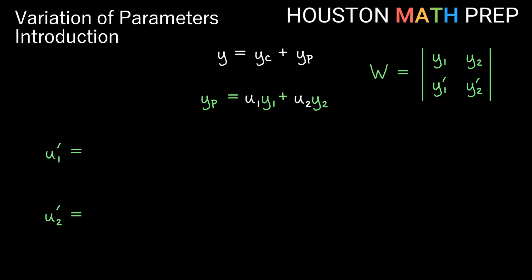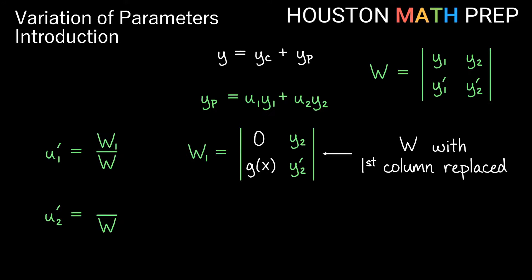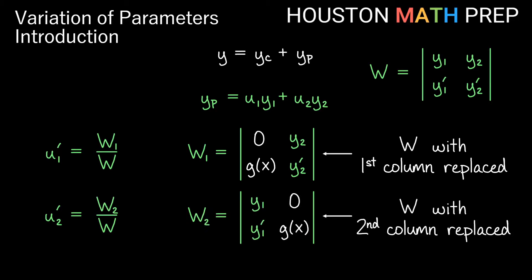Both formulas for u1' and u2' have the Wronskian in the denominator. The Wronskian is the 2×2 matrix with y1 and y2 in the first row and their derivatives in the second row — we take its determinant. For u1', the numerator is W1: that's the Wronskian with the first column replaced by 0 and g(x). Similarly, for u2', the numerator is W2: the Wronskian with the second column replaced by 0 and g(x), and we take that determinant.